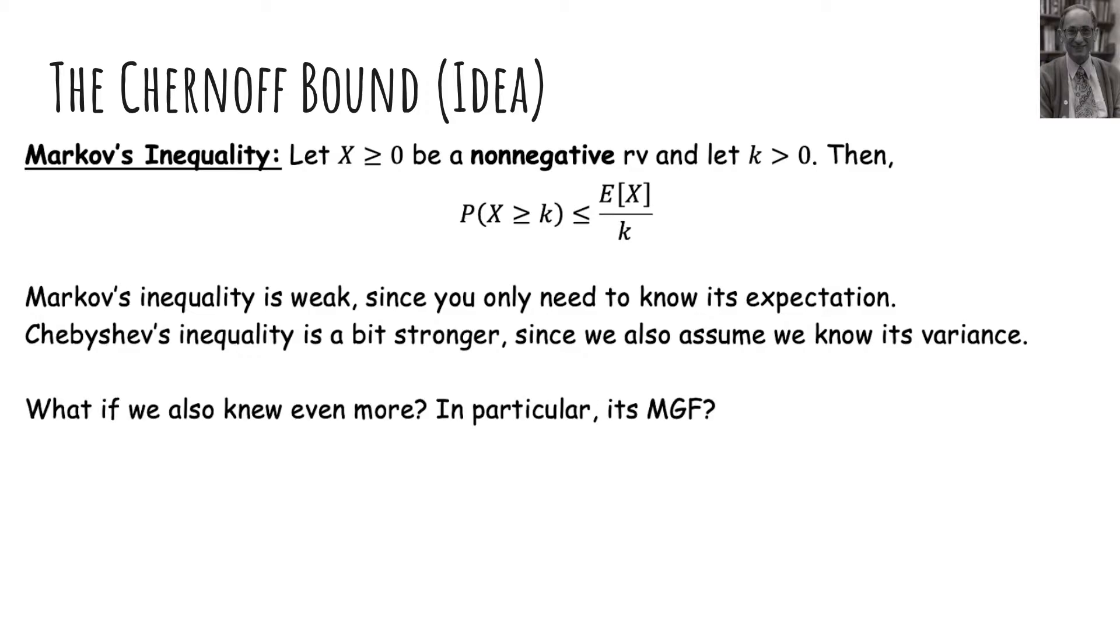So if we knew its moment-generating function, which we could compute if we knew its PMF or PDF, then if x is any random variable, there's no restriction. First, notice that e to the tx is always a non-negative random variable because e to the anything is always non-negative.